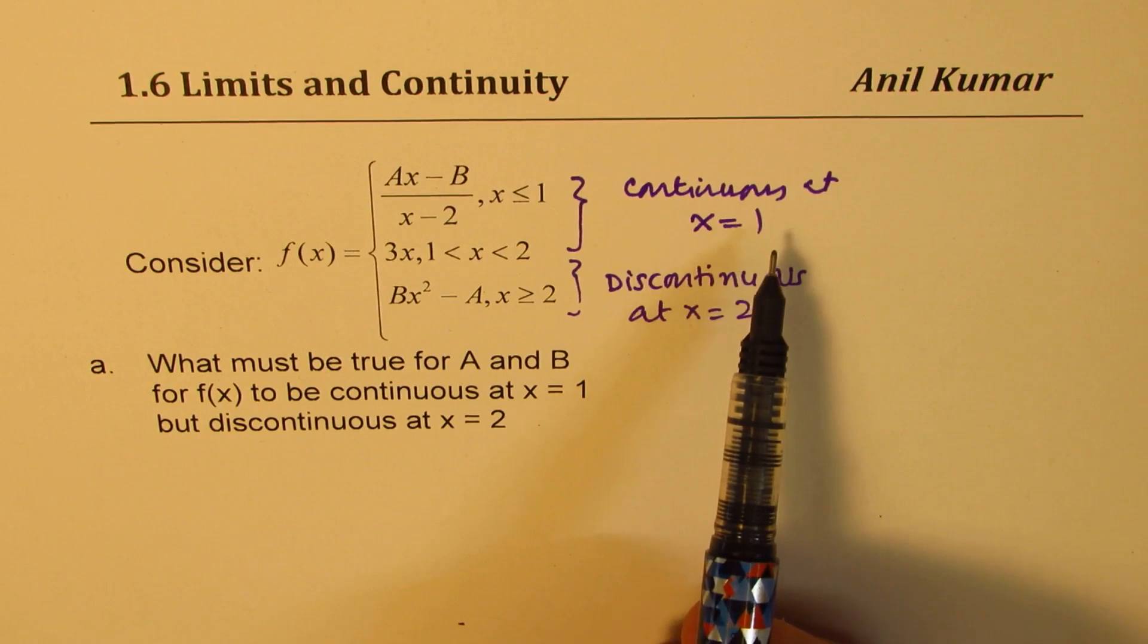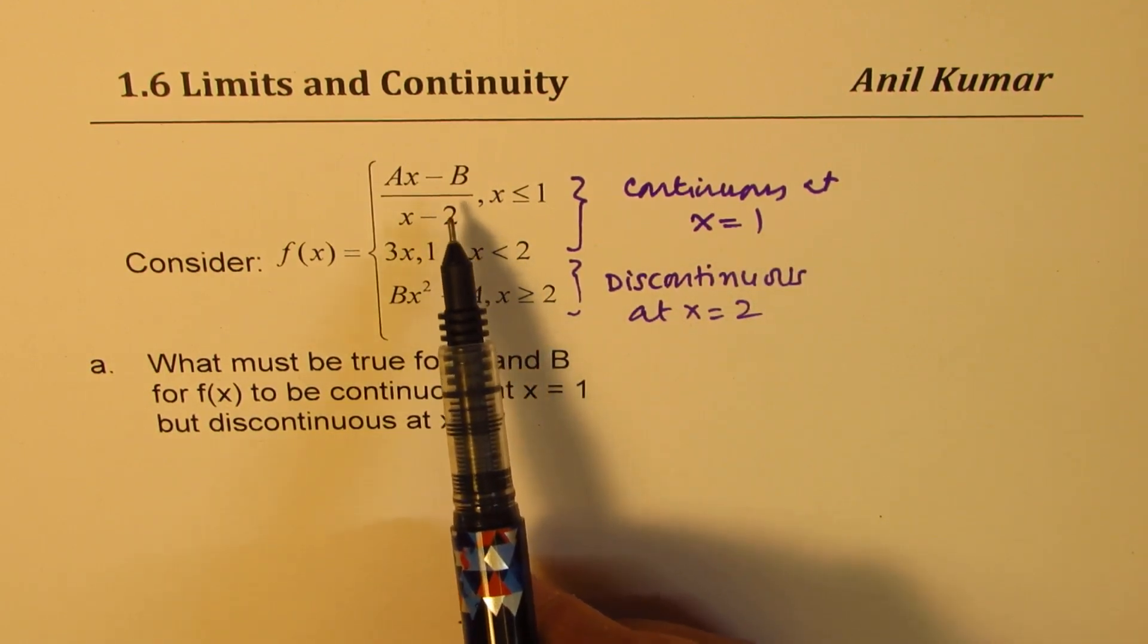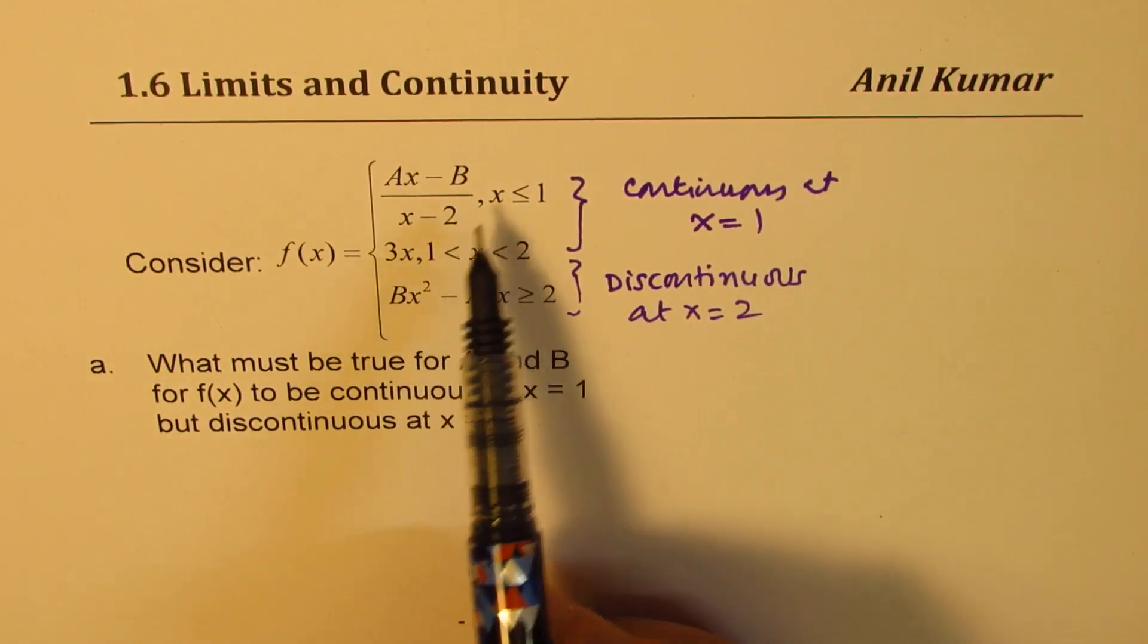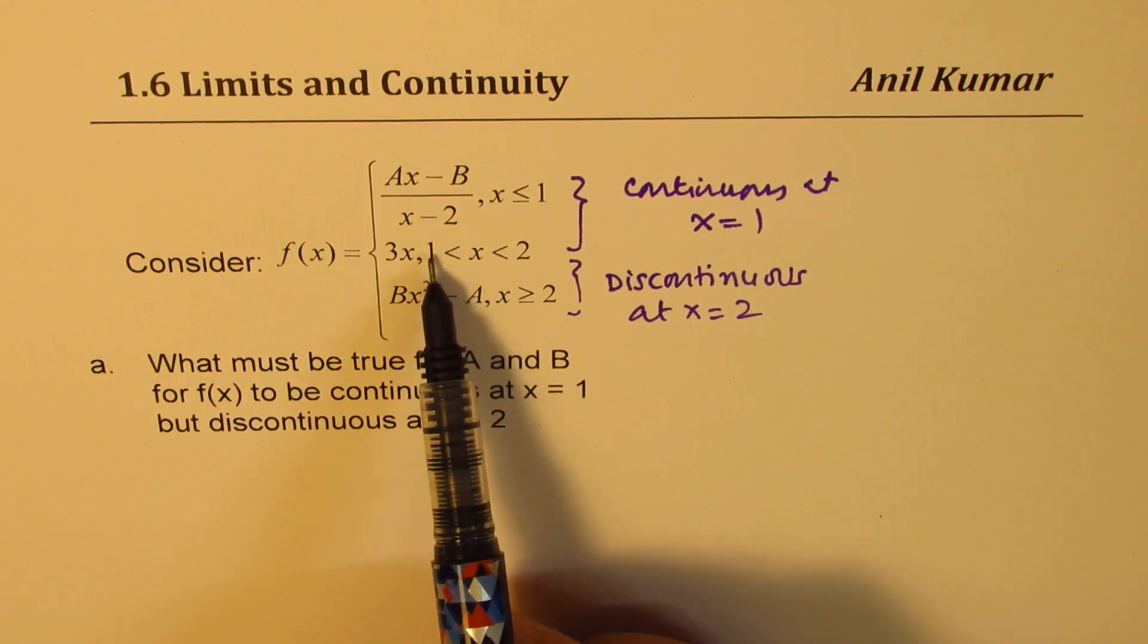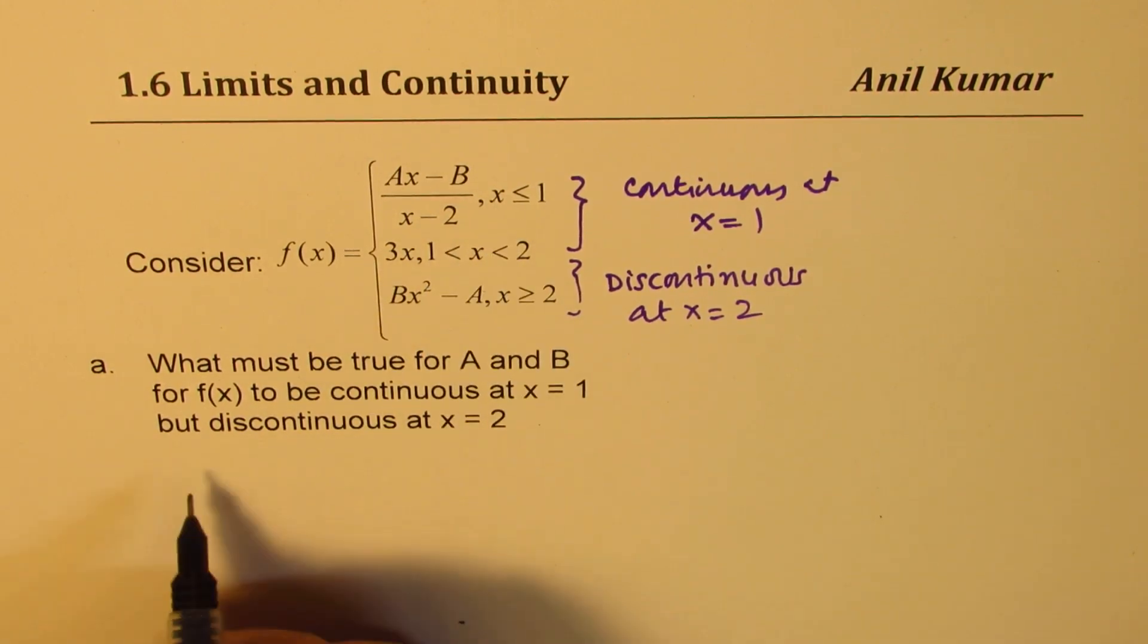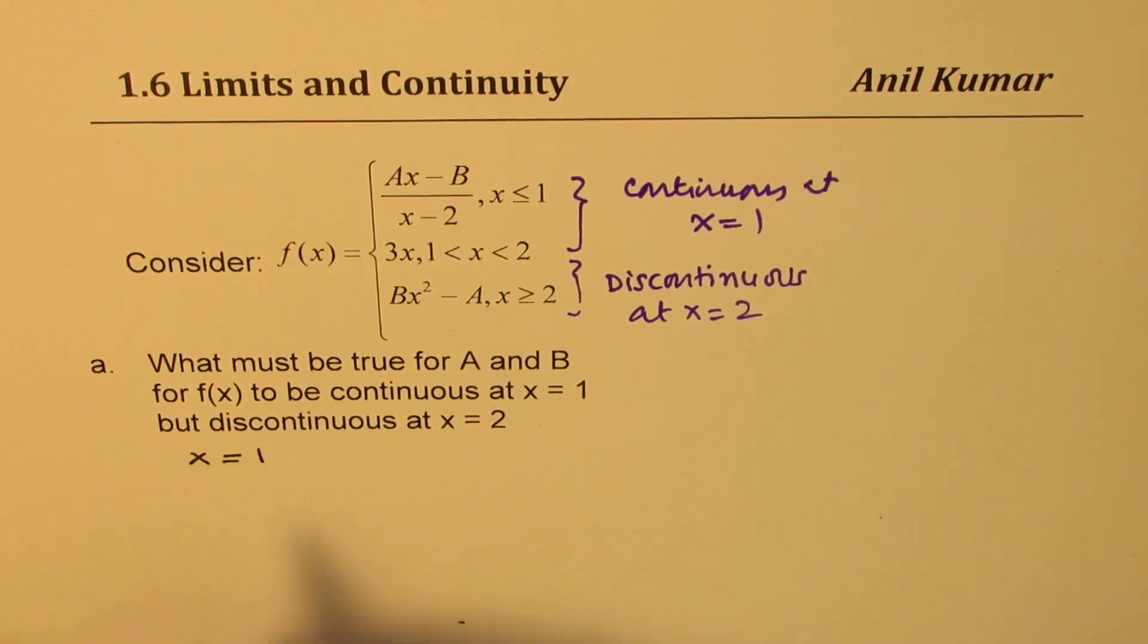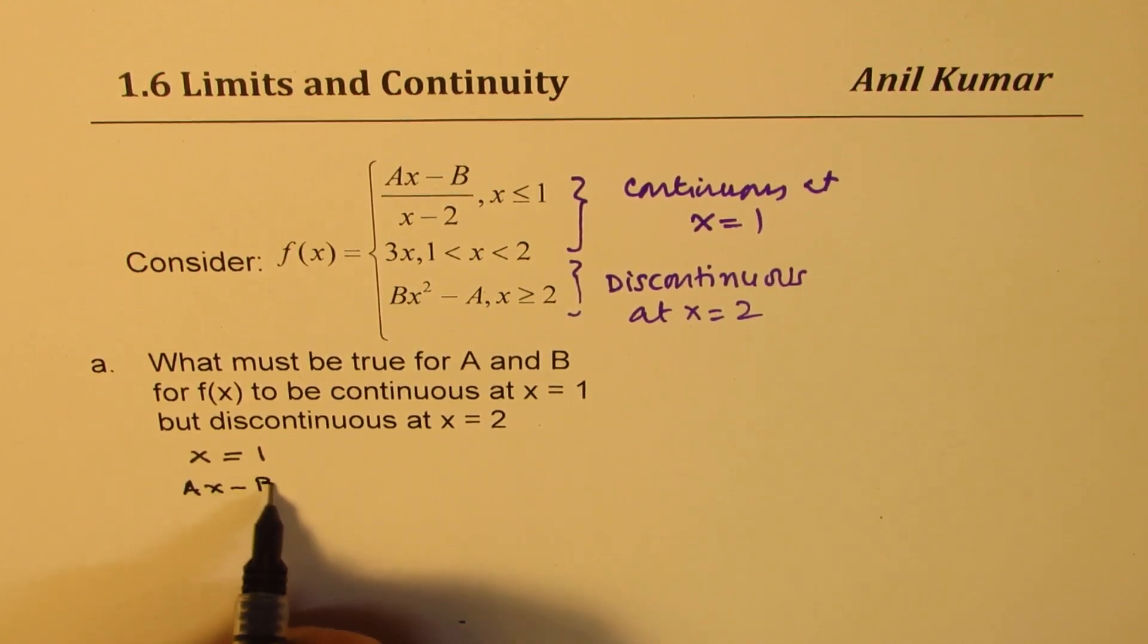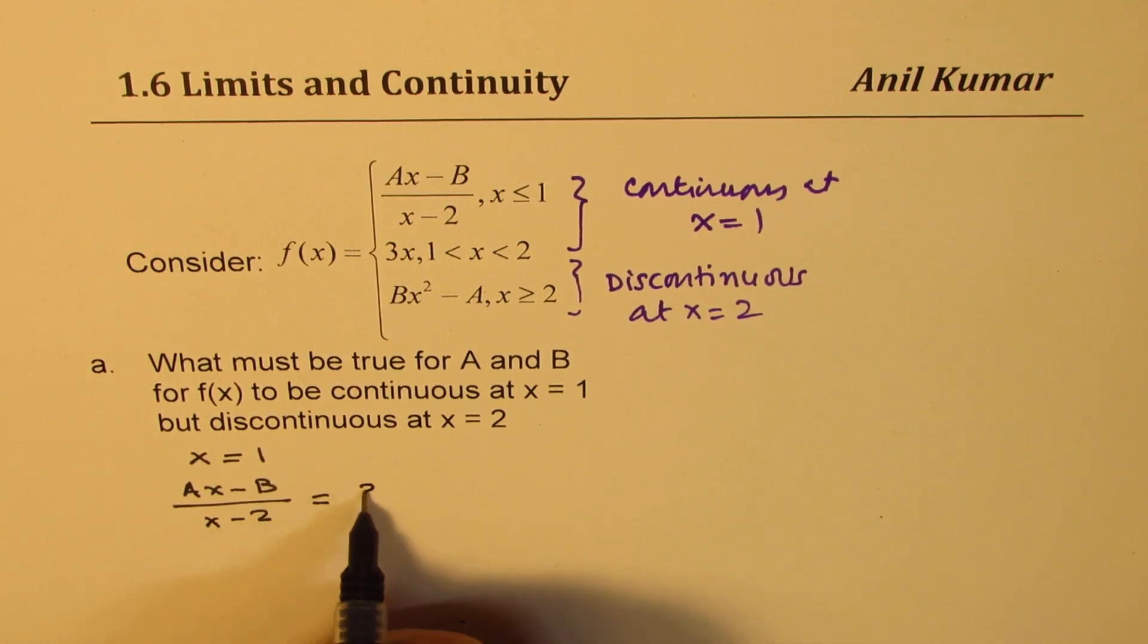that means the rational function and the linear function should meet at x equals 1. So at x equals 1, Ax minus B over x minus 2 should equal 3x.